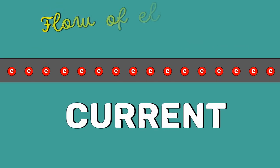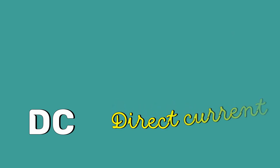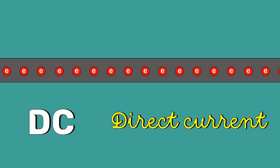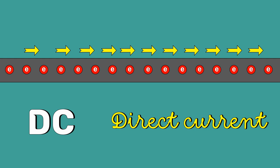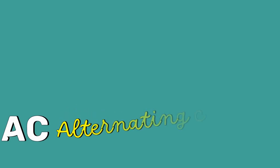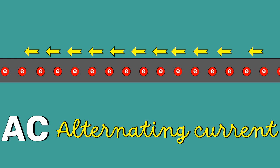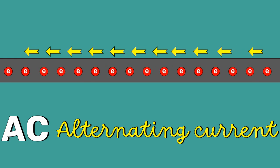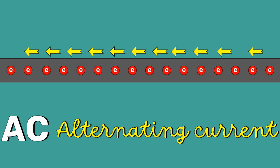The current is the flow of electrons. DC refers to direct current — here the electrons flow in one particular direction. AC refers to alternating current — here the electrons reverse their direction many times a second at regular intervals.